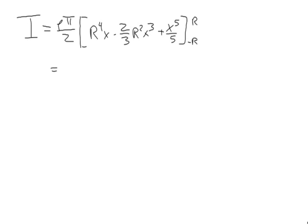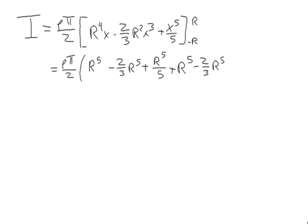Evaluating, we have rho pi over 2 times r to the fifth minus 2 thirds r to the fifth plus r to the fifth over 5, plus r to the fifth minus a negative 2 thirds r to the fifth. Here it's 3 negatives, r to the fifth over 5. Notice that these are all r to the fifth, and you can add fractions.